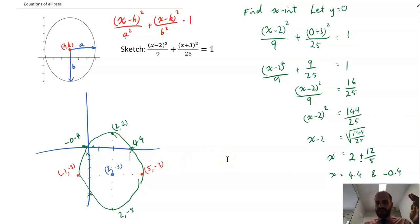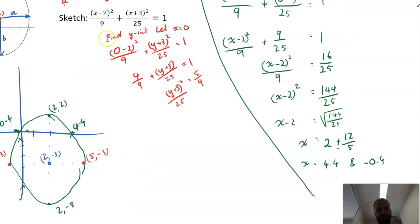Now what about my y-intercepts? Well, same process. I've got a little jump start on the process. Find y-intercept, let x equal 0, sub x equals 0 in there. I've got y plus 3 squared over 25 equals 5 over 9.